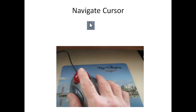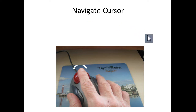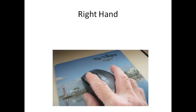How do you navigate with a trackball mouse? You take your finger, hold it on the ball, and move it to the right — and the cursor moves to the right. You hold on to the ball and move it to the left, and the cursor moves to the left.